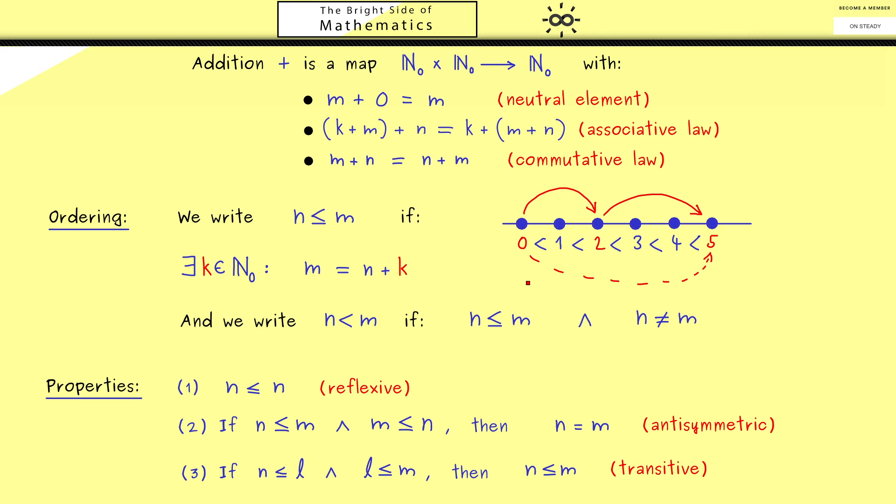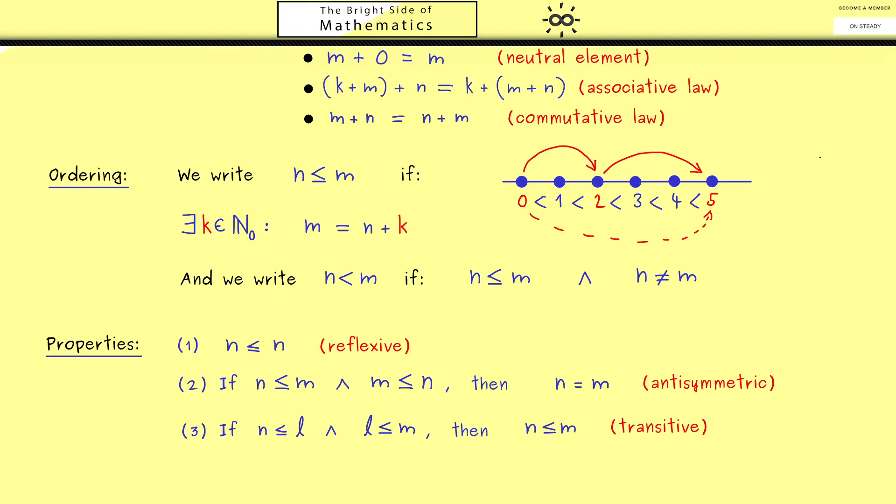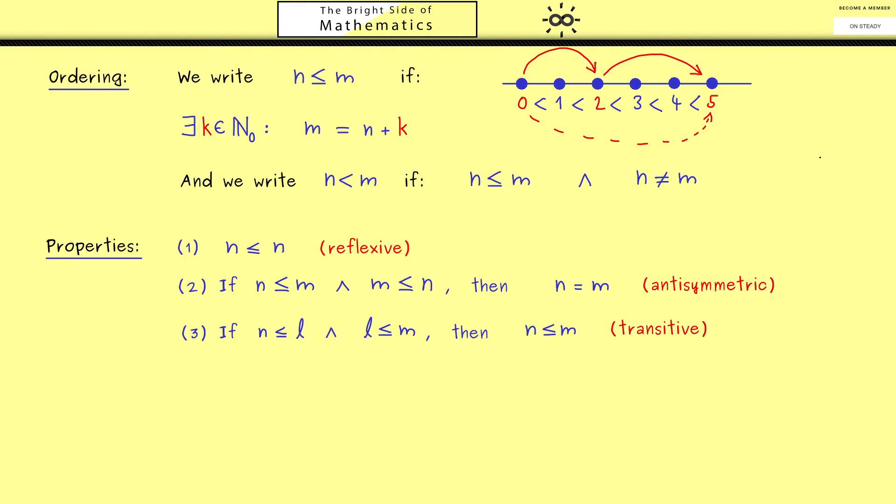Of course this idea is what we can use in a proof of this property. And such a property where I can put these two things together is called transitive. Okay now I think it will be a good exercise to write down a proof for this third property.